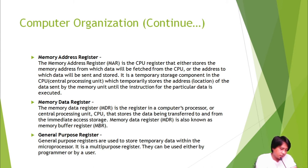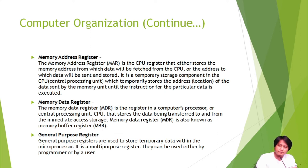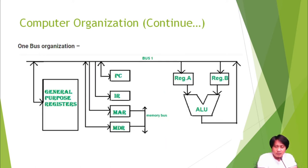We also have the general purpose register. The main reason for this is to give flexibility to a programmer or the computer itself to store or retrieve data faster. General purpose registers are used to store temporary data within the microprocessor — they are multi-purpose registers that can be used by the programmer or the user.